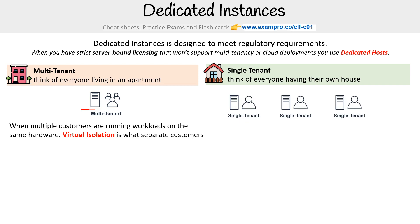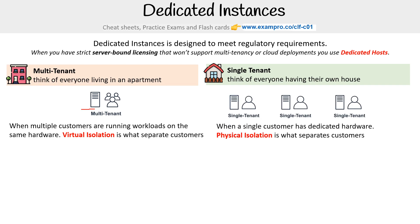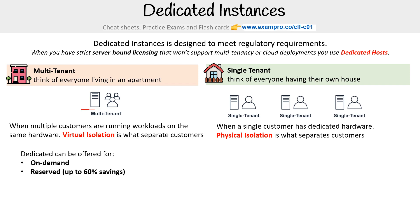With single-tenancy, a single customer has dedicated hardware, so the physical location is what separates customers. Dedicated instances can be offered via on-demand, reserved, and spot.